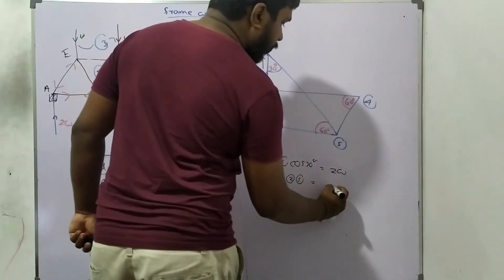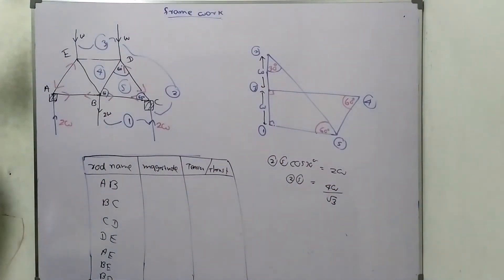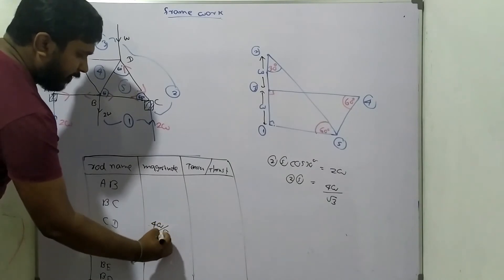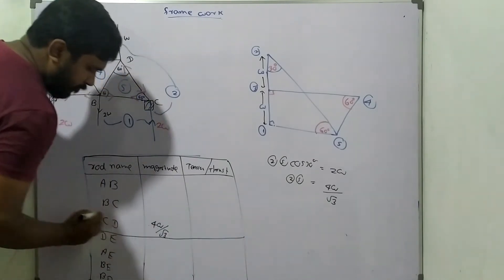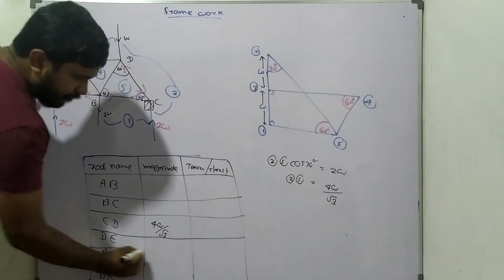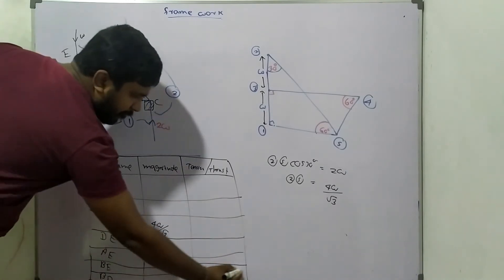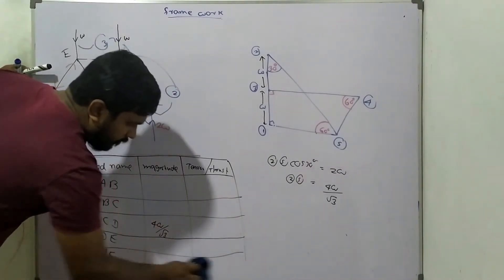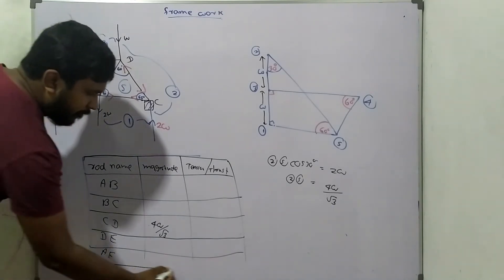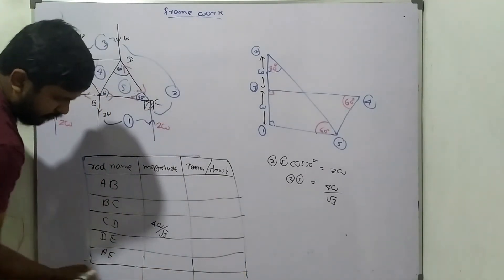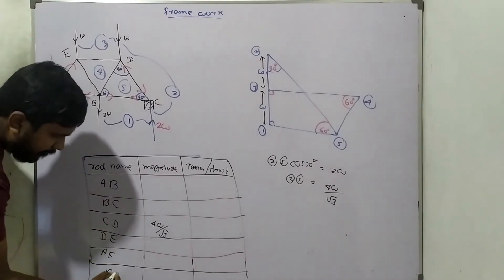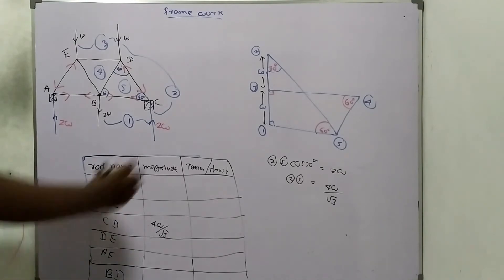4W/√3 — that is the BZ rod, meaning 4W/√3. The rod numbers are one through seven. We have AE, BD, and BE. I'm putting BE here.